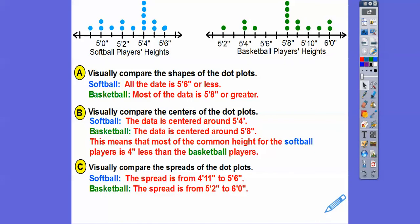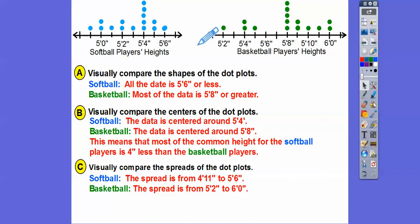Now let's compare the spreads. The softball players' spread goes from 4'11" all the way up to 5'6" — that's 7 inches. The basketball players' spread goes from 5'2" to 6'0" — that's 10 inches. So the basketball players have a wider spread.